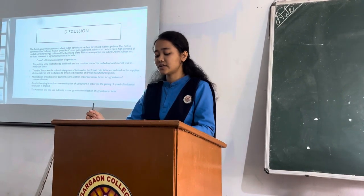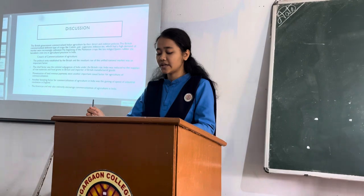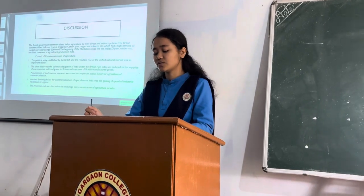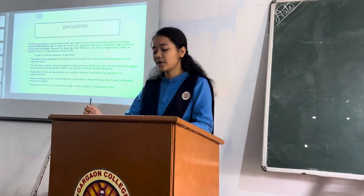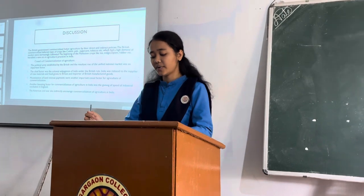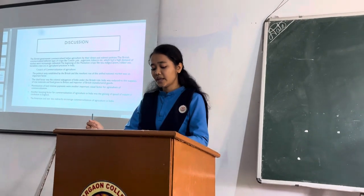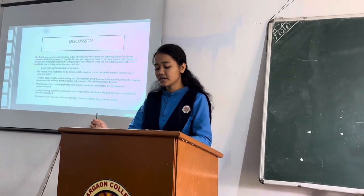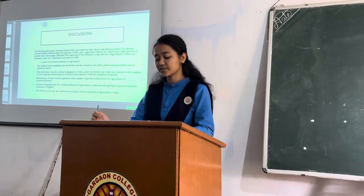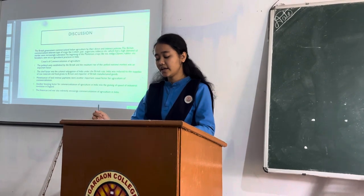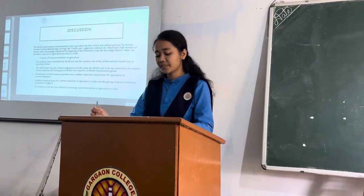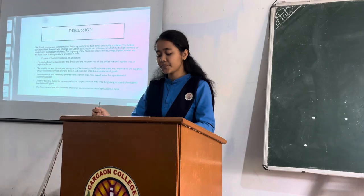The British government commercialized Indian agriculture through their direct and indirect policies. They commercialized different types of agricultural crops like cotton, sugarcane, tobacco, etc., which were in high demand in the market and were increasingly cultivated. The beginning of plantation crops like tea, indigo, opium, rubber, and coffee also took place during this period.